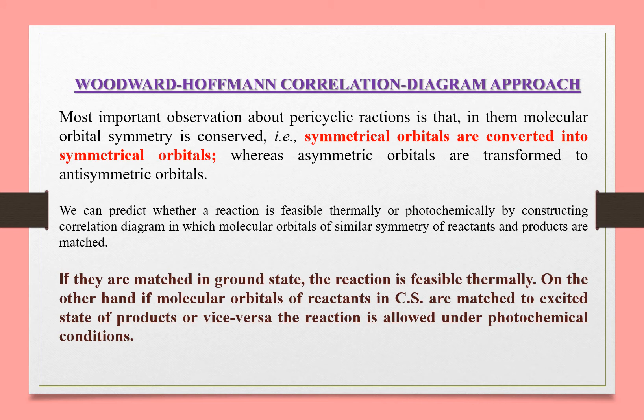Coming to the Woodward-Hoffmann correlation diagram approach: the most important observation about pericyclic reactions is that molecular orbital symmetry is conserved. In this case, the orbital symmetry is conserved under thermal conditions.